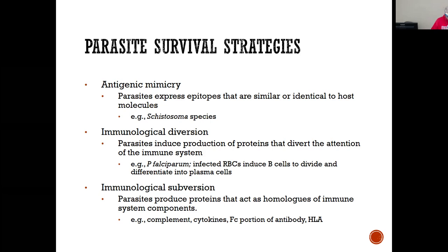The antigenic mimicry occurs when the parasite expresses epitopes similar or identical to host molecules. The similarity between host and parasite antigens may suppress the immune response and protect the parasite from being recognized and eliminated. An example is Schistosoma species. The immune response results where the parasite cross-reacts may lead to autoimmunity, manifesting autoantibodies — now the immune system is attacking host tissue.